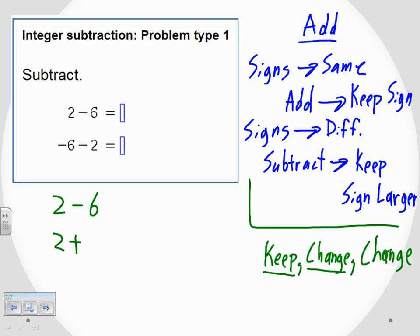And then the last thing is we change the sign on that last number. So instead of this being two minus a regular or a positive six, we're going to turn it into a negative six. So we kept the first sign. We changed the operation to addition. And we changed that last sign from a positive six into a negative six. And now we have an addition problem. So we get to use those addition rules that we learned for addition of integers.